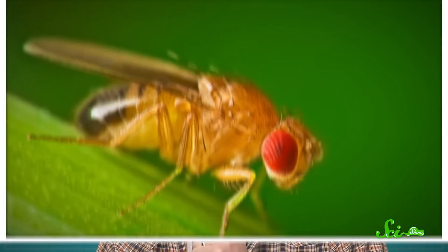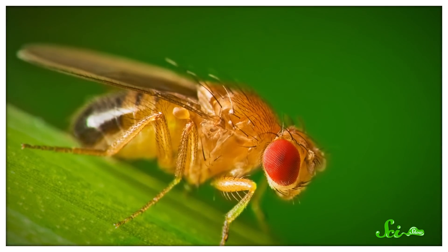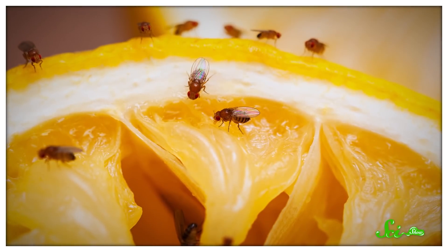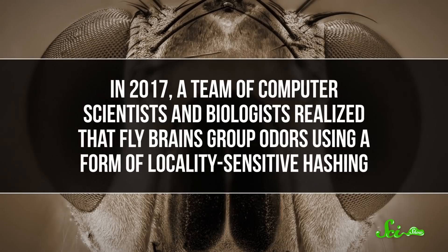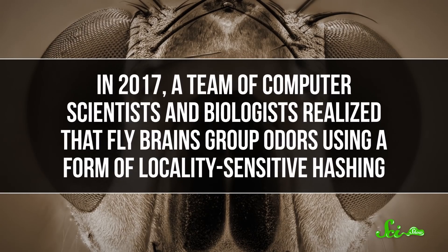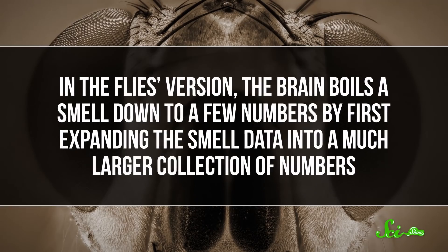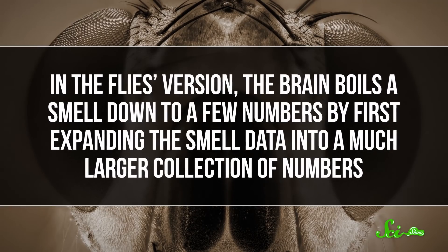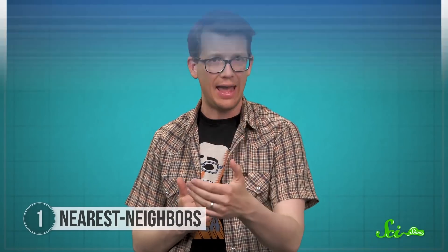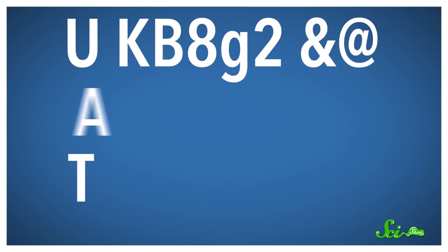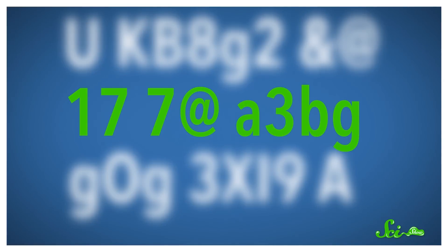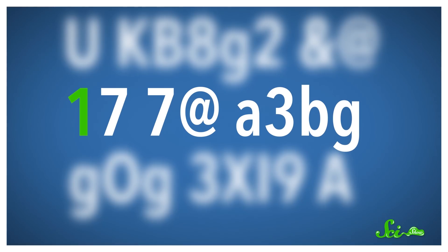That is where fly brains come to the rescue. A fly can smell, but it doesn't differentiate every subtle variation of odor— it groups odors into categories so it can learn that, for instance, cheese smells often lead to fruit, but book smells don't. In 2017, a team of computer scientists and biologists realized that fly brains group odors using a form of locality-sensitive hashing. Except in the fly's version, the brain boils a smell down to a few numbers by first expanding the smell data into a much larger collection of numbers, and only then selecting a few of those numbers as the hash. It's sort of like expanding an essay by replacing each character with a random ten-character code, producing a string of gibberish ten times as long.